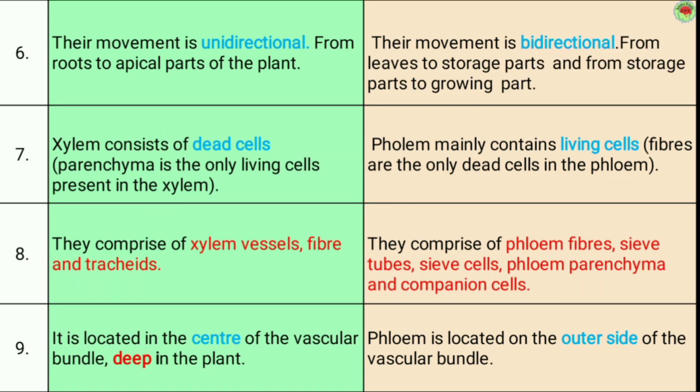Sixth, the movement in xylem is unidirectional — meaning movement is in one direction only, from the roots to the apical part of the plant. In phloem, the movement is bidirectional — meaning movement occurs in two directions: from leaves to the storage part, and from the storage part to the growing part.